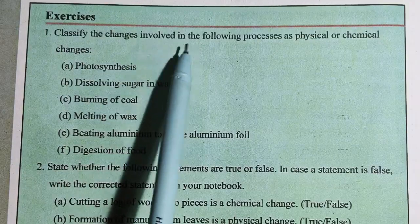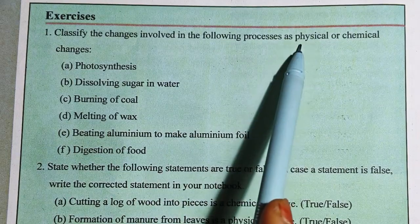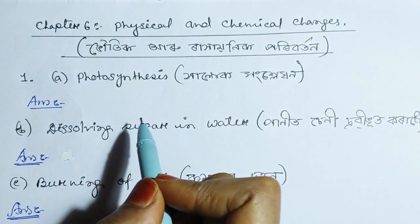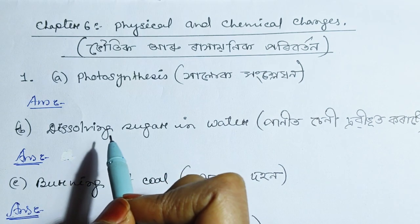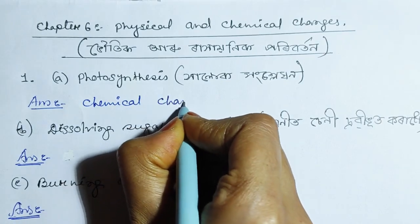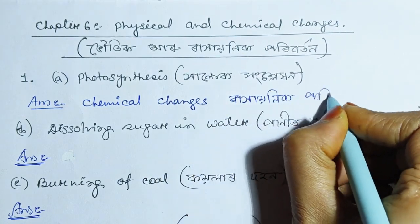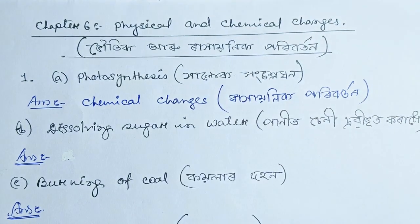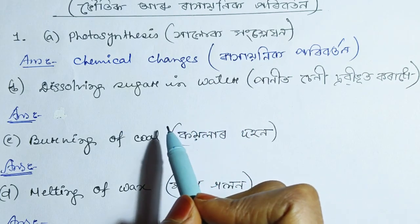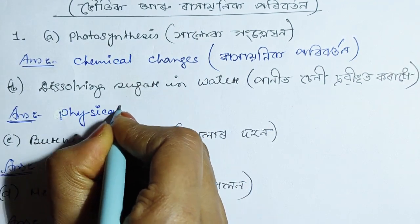Question 1: Classify the changes involved in the following processes as physical or chemical changes. Photosynthesis is a chemical change. Dissolving sugar in water is a physical change.